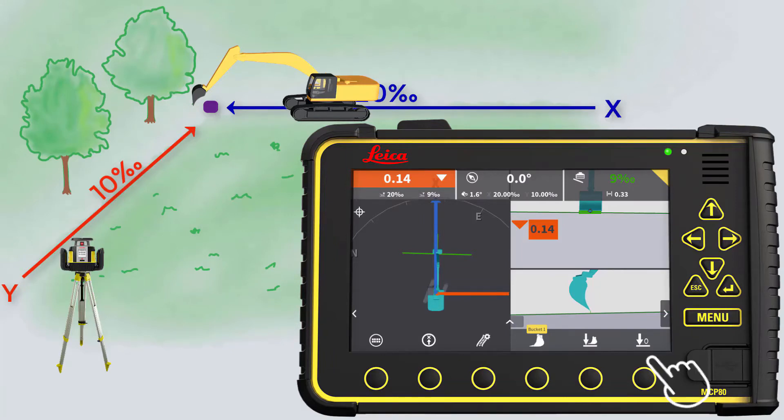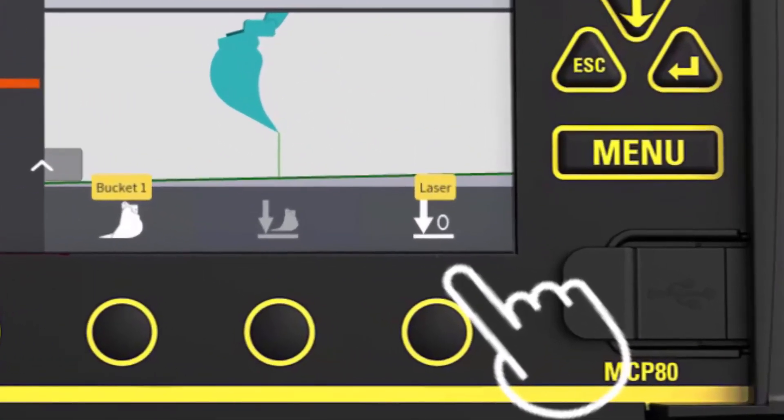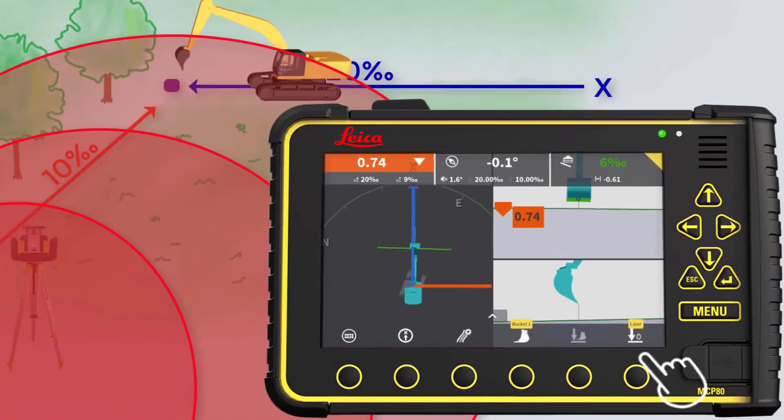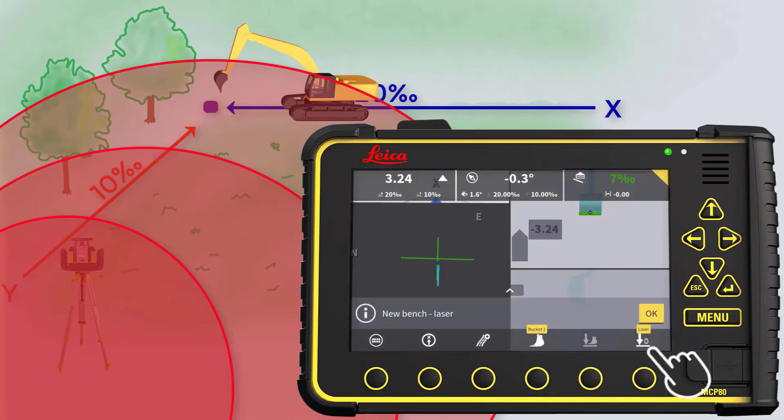Position your boom and stick so the laser catcher registers the laser beam. When MC1 can see the laser beam, the zero button will become a laser zero button. Press the laser zero button.